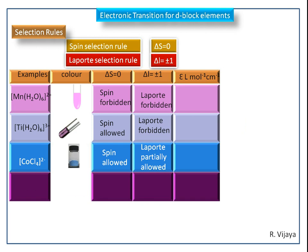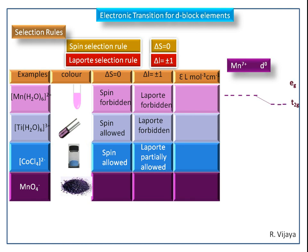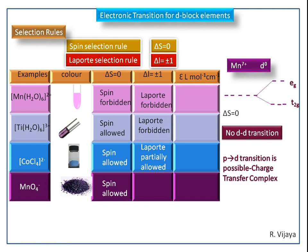Next, we see potassium permanganate. Here, manganese has a plus 7 oxidation state. In this oxidation state, it doesn't have D electrons, so we should not get a D-D transition. It follows the charge transfer transition, which is both spin allowed and Laporte allowed.